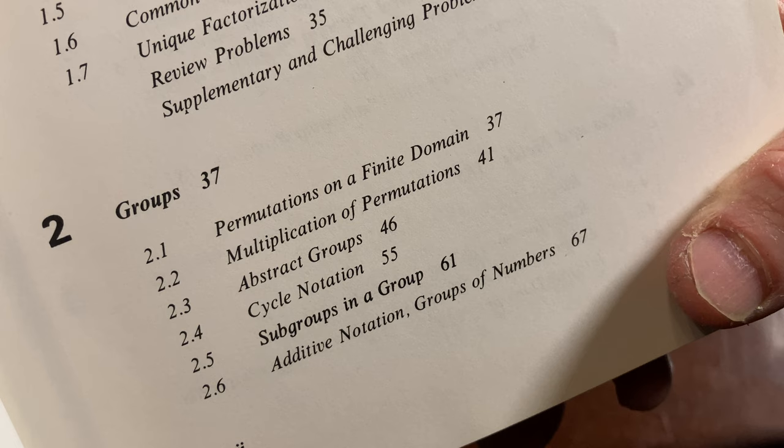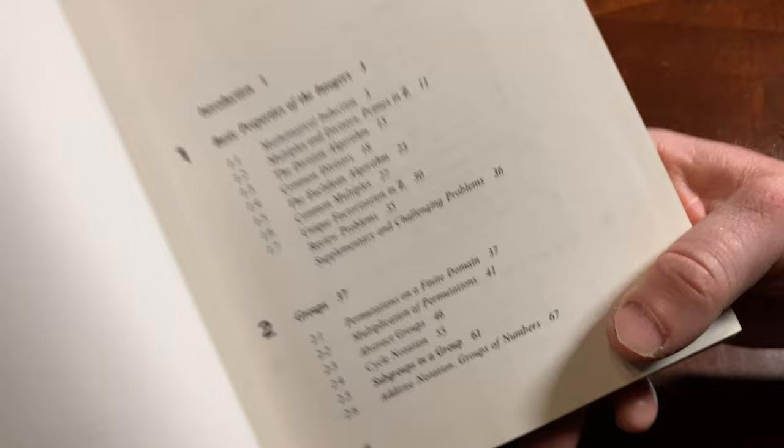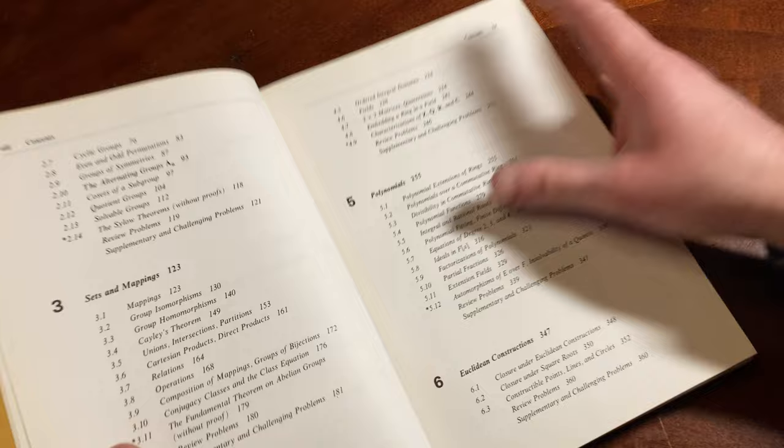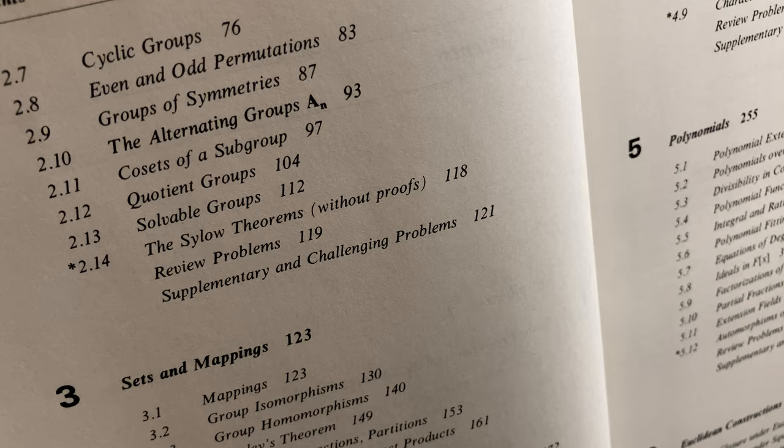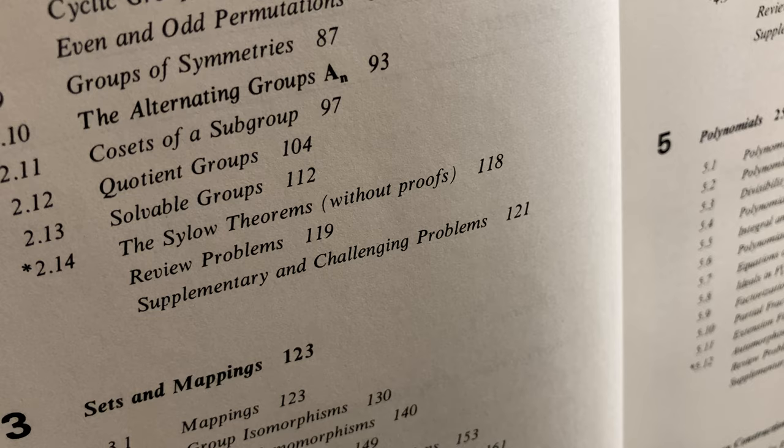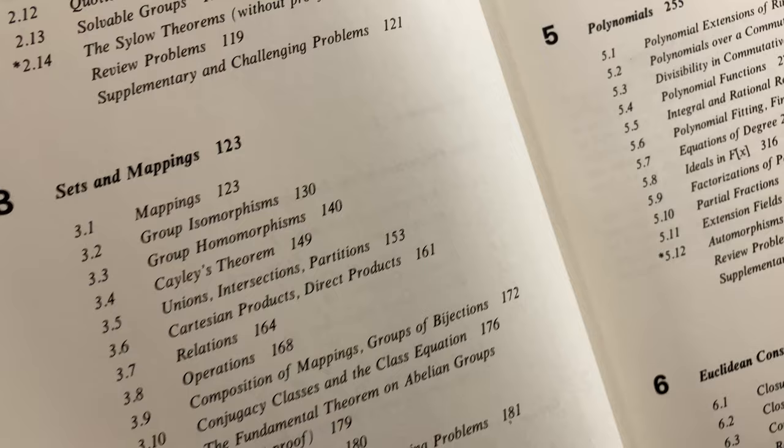Additive notation, interestingly wait until then to introduce that groups of numbers. Then we have cyclic groups, even and odd permutations, groups of symmetries, the alternating group A_n, cosets of the subgroup, quotient groups, solvable groups, the Sylow theorems without proofs, then sets and mappings.